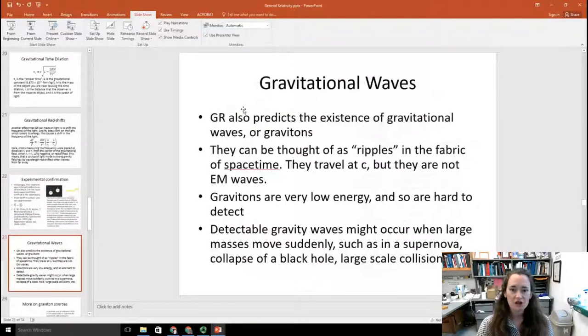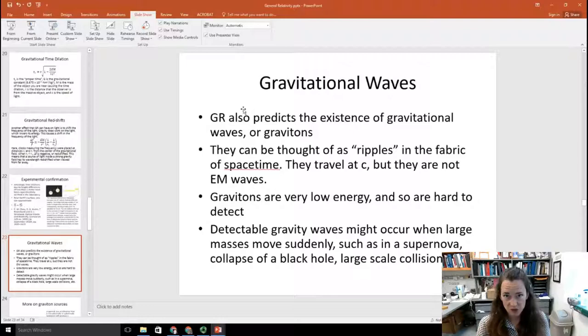Now, general relativity also predicts the existence of gravitational waves, also known as gravitons. So, in other words, the information about the changes in spacetime due to the motion of objects has to be propagated through space. That's done with a graviton. And what's a graviton? Well, you can think of it as a ripple in the fabric of spacetime. So they travel at the speed of light, but remember, these are not electromagnetic waves. They're ripples in the fabric of spacetime. Now, gravitons are very low energy, so they're hard to detect.